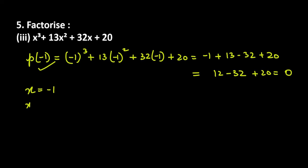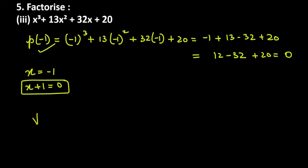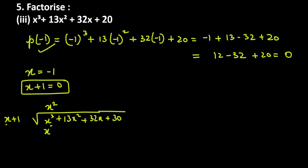Since x = minus 1 is a factor, x plus 1 is a factor of the polynomial. We divide x cube plus 13x square plus 32x plus 20 by x plus 1. Outside we have x, first term is x cube, so multiply by x square. x square times x gives x cube; x square times 1 gives x square. After subtraction: x cube cancels, 13x square minus x square gives 12x square.